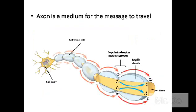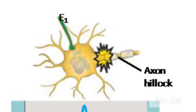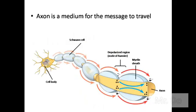So at the synapse, the neurotransmitter from one neuron will open the channel, and then the channel on the dendrite will start to generate an action potential. Once the action potential is fully generated, it's going to travel down the axon very fast, jumping from node to node with the help of the myelin sheath.